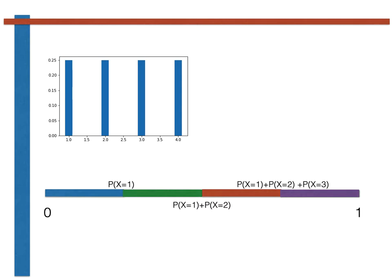The green region then ends at the probability of x equals 1 plus the probability of x equals 2. So the green region has a total length that is proportional to the probability that x is equal to 2, and so on.